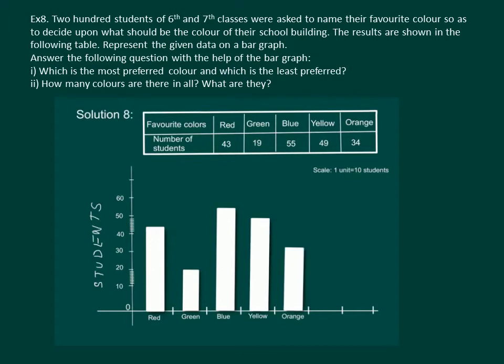Similarly, corresponding to yellow color and orange color we make bars depicting 49 students like yellow color and 34 students like orange color.